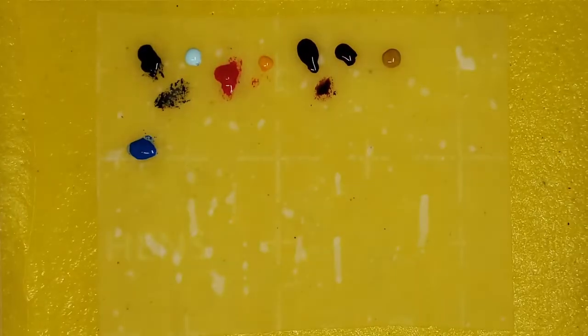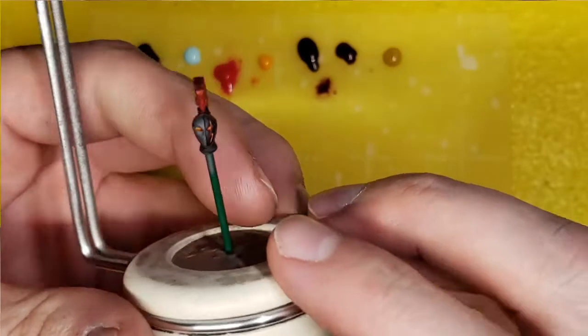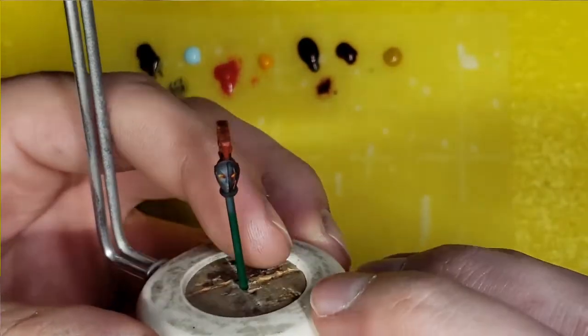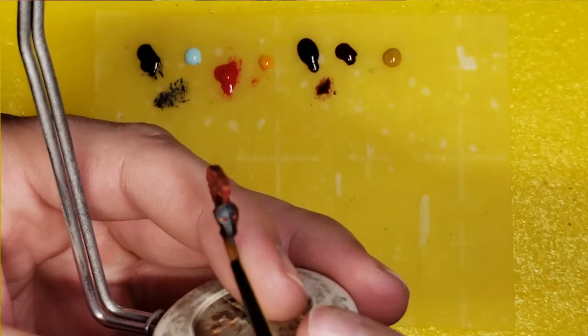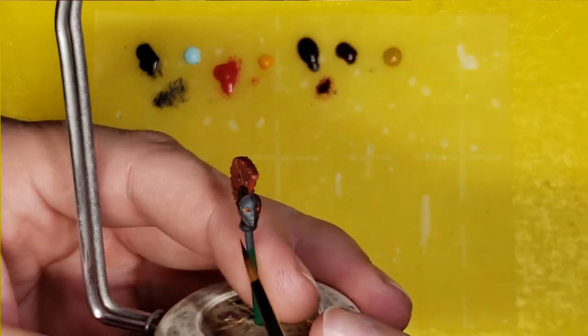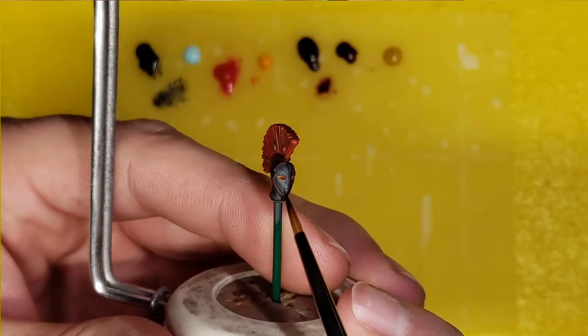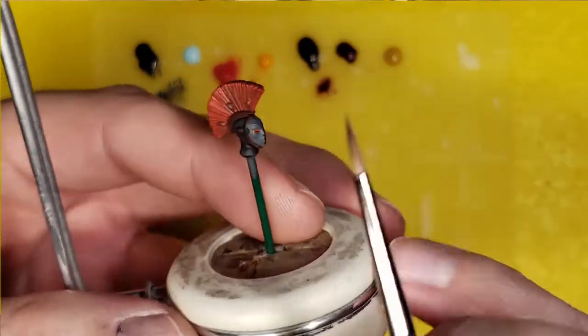Hello and welcome to another painting tutorial following the Harlequins. Today I'm going to be painting the bluish ceramic-looking coloration that you might have seen on some of the finished models.